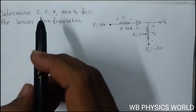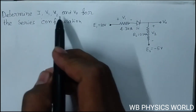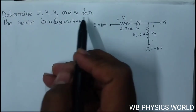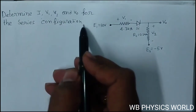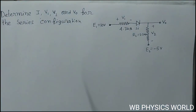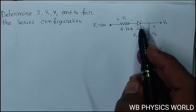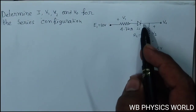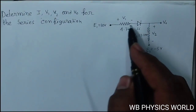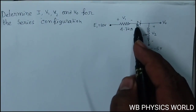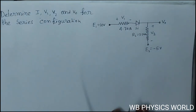Determine I, V1, V2, and V0 for the series configuration. Here a silicon diode is used in forward bias condition.